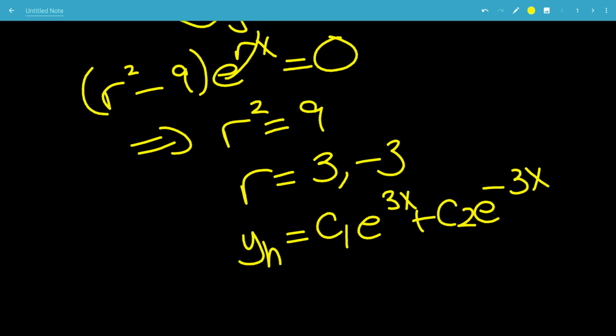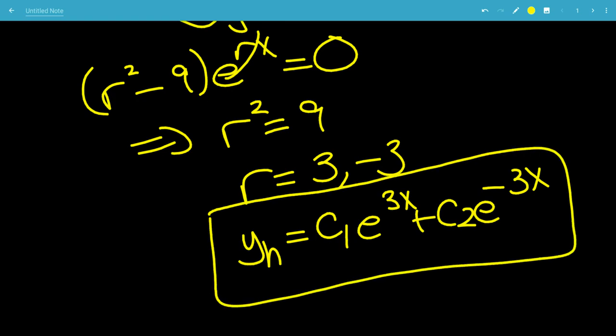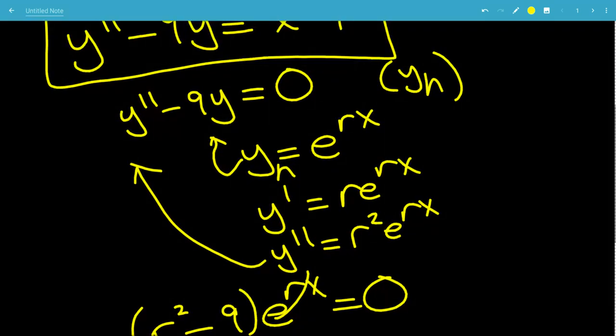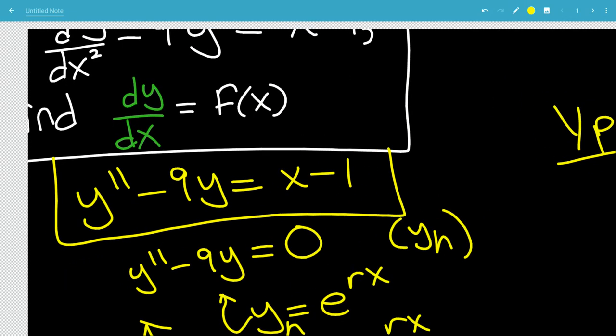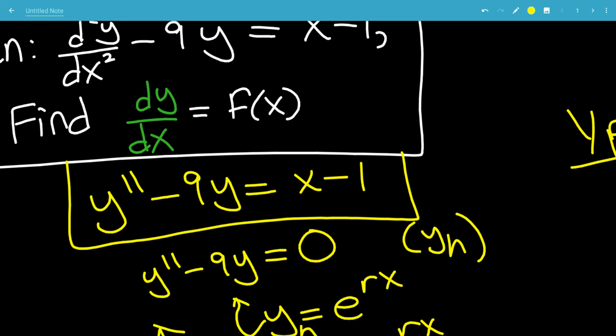So that is good. So we want yp, which is the particular solution. We're going to say it equal to y, but it's yp.